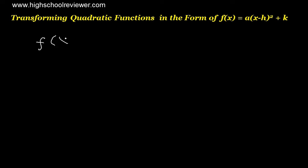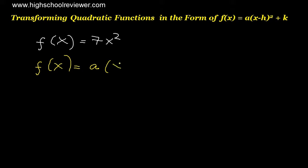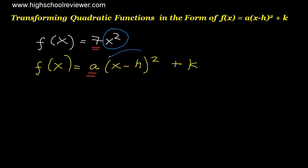We have here f(x) equals 7x squared. We will transform this given equation in the form of f(x) equals a multiplied by the quantity of x minus h raised to the power of 2 plus k. Looking at the two equations, 7 here will be equivalent to a, and x raised to the power of 2 is equivalent to the quantity of x minus h raised to the power of 2. And for k, we can see that there is no value for k here.